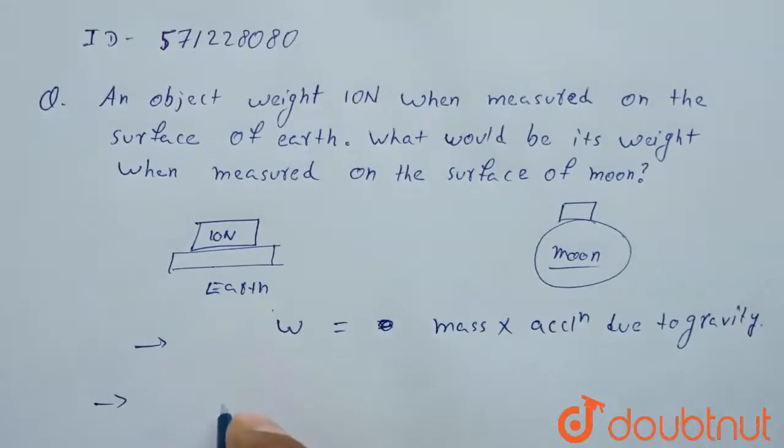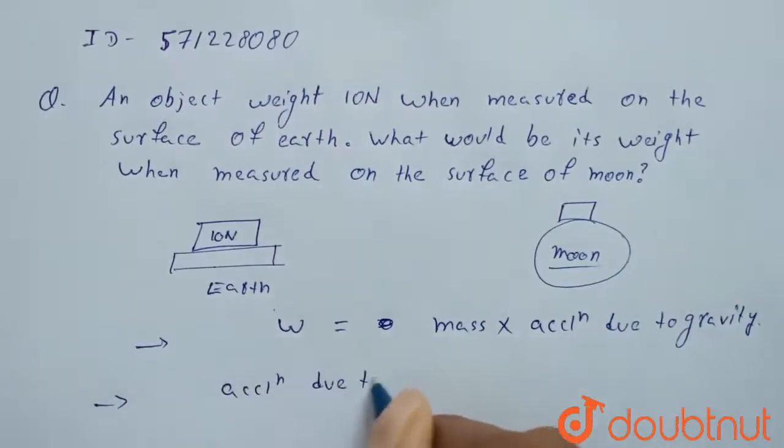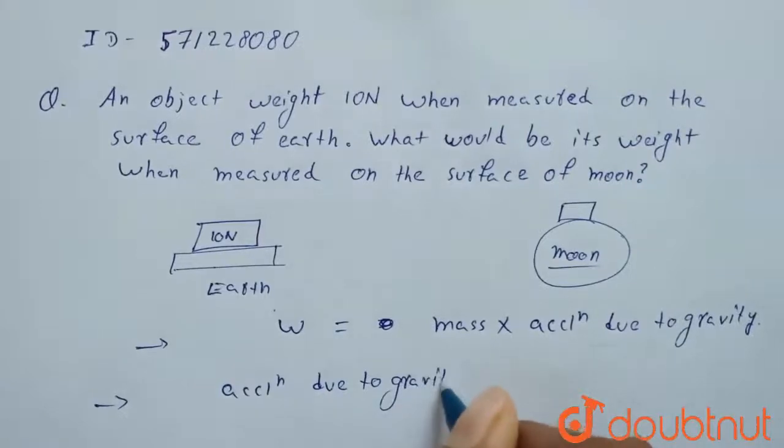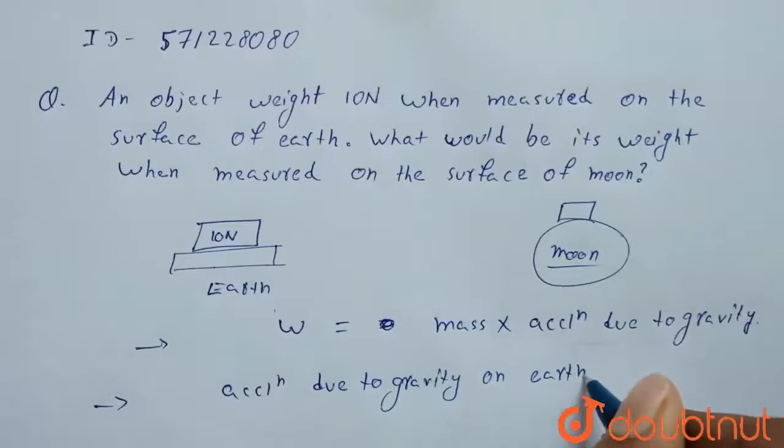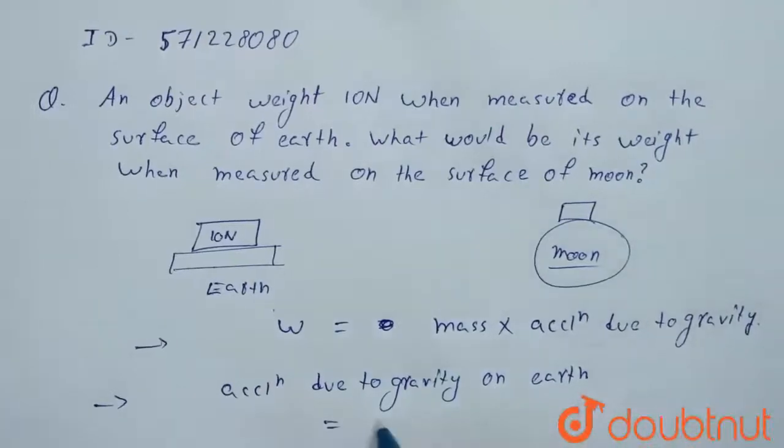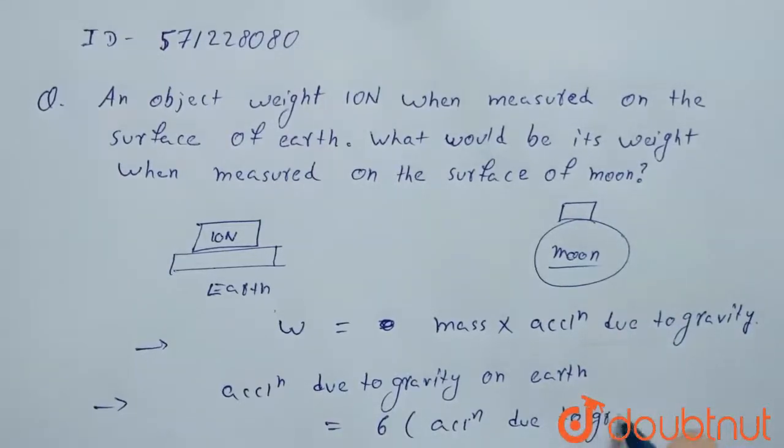And we have a relation between acceleration due to gravity of earth and acceleration due to gravity of moon. That is acceleration due to gravity on earth is six times acceleration due to gravity on moon.